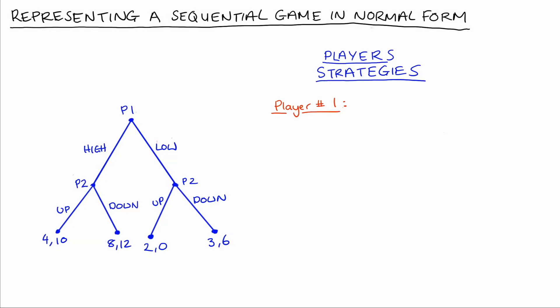For our game, Player 1 can either play high or low, and that's really it for Player 1 in terms of their possible strategies. They don't find themselves in any other situations — they're not responding to anyone. So Player 1 has two strategies. Player 2 is a little more complex since they are responding to Player 1, and Player 1 might play high or they might play low. Whilst Player 2 has only two possible moves — up or down — they will actually have four strategies in total.